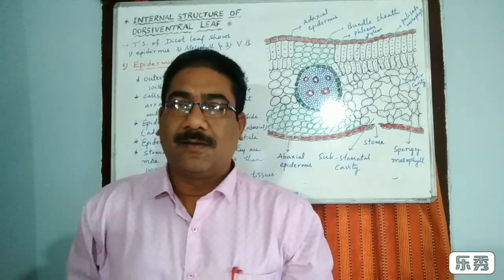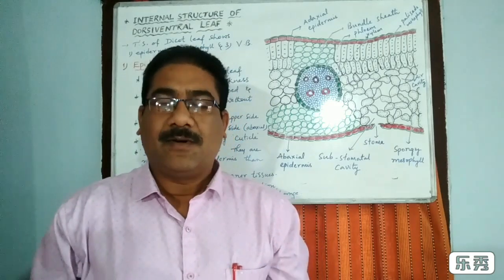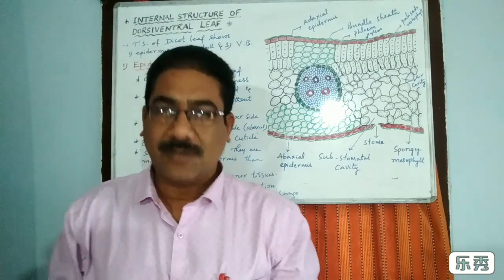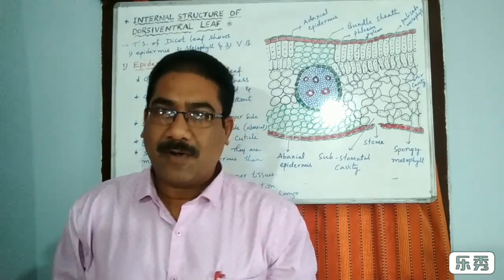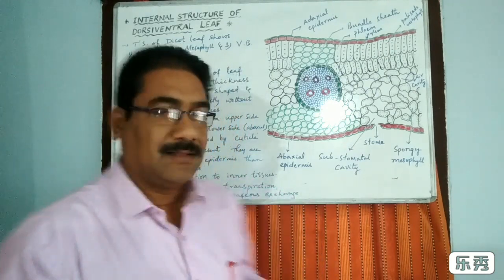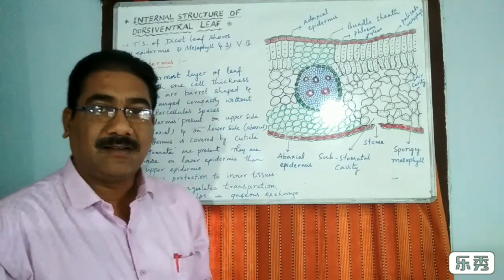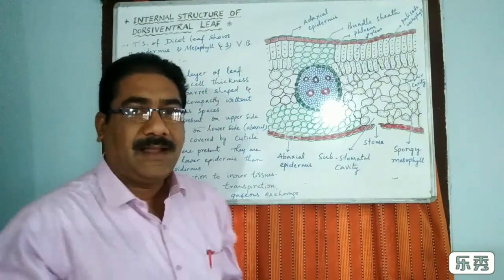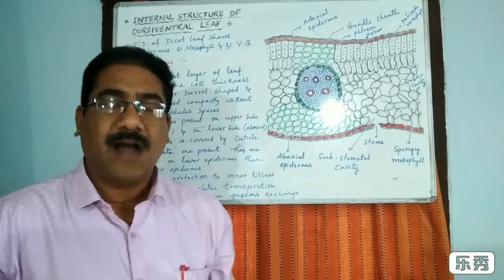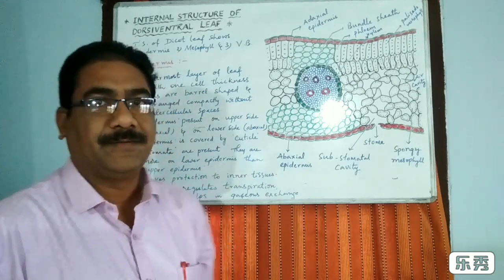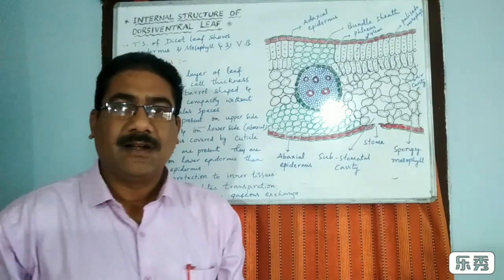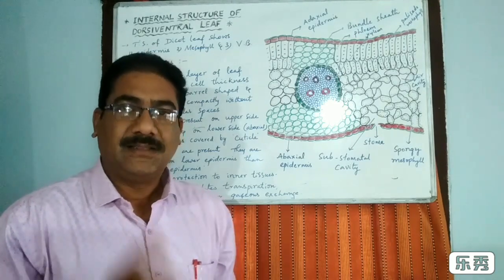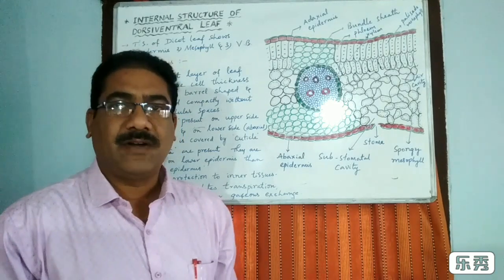In the last video we discussed about dicot stem and monocot stem. In this video we will discuss about dicot leaf or dorsiventral leaf. The transverse section of a dorsiventral leaf or dicot leaf shows three main important parts.